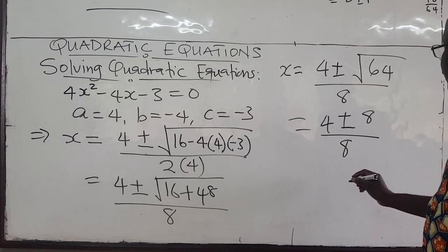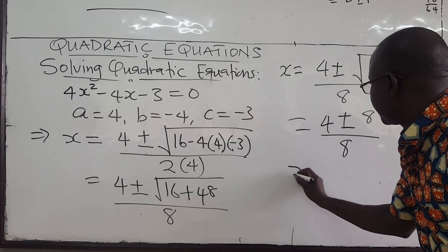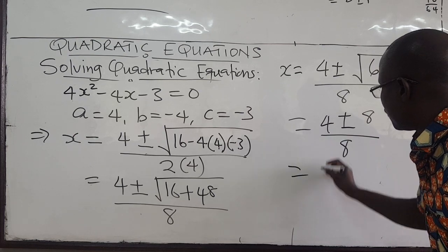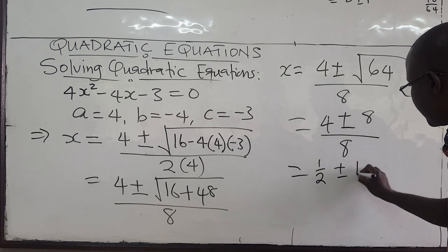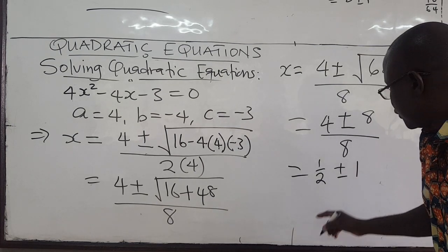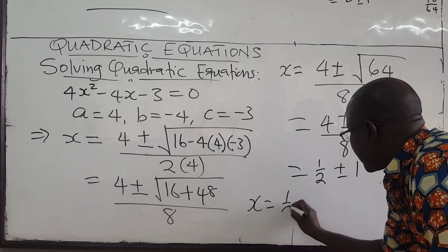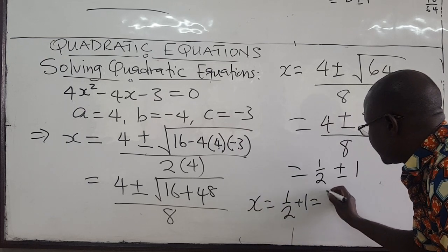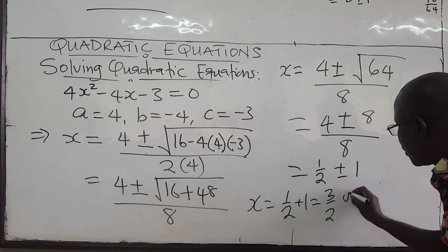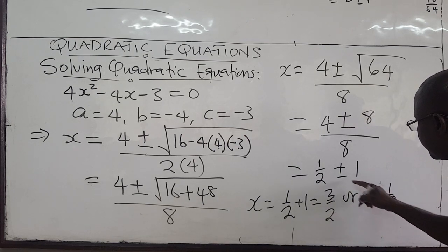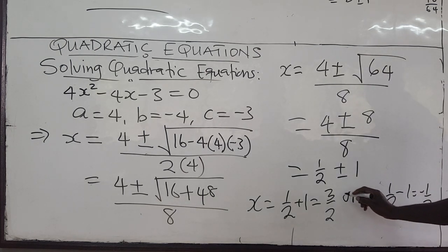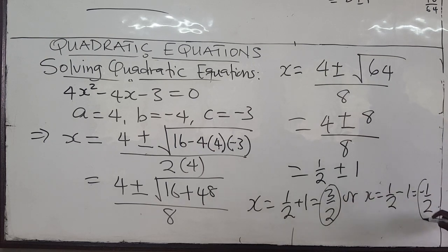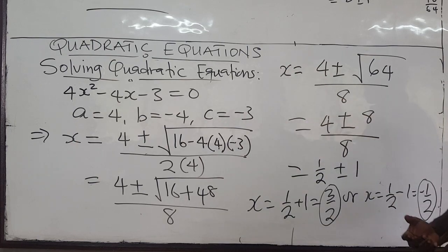We can simplify: 4/8 = 1/2, and 8/8 = 1. So x is either 1/2 + 1 = 3/2, or x is 1/2 minus 1 = negative 1/2. So x = 3/2 or x = negative 1/2 — which is exactly what we got when we used the factorization approach.